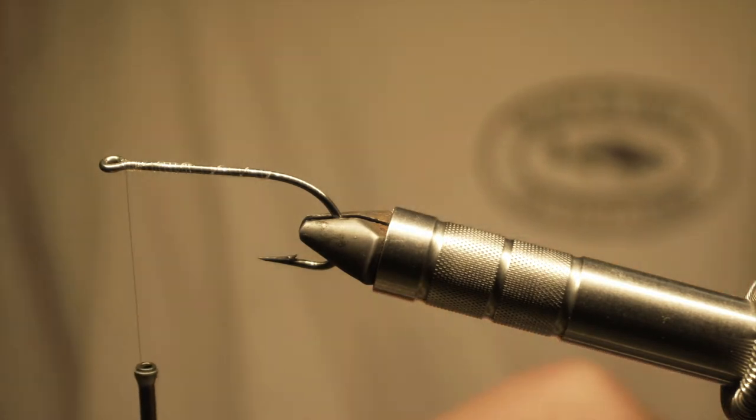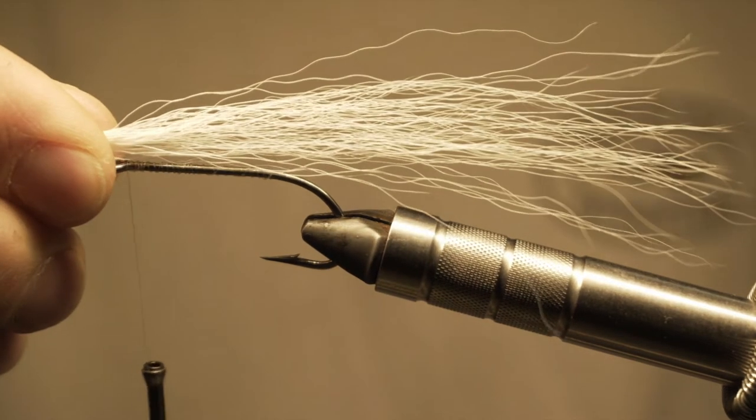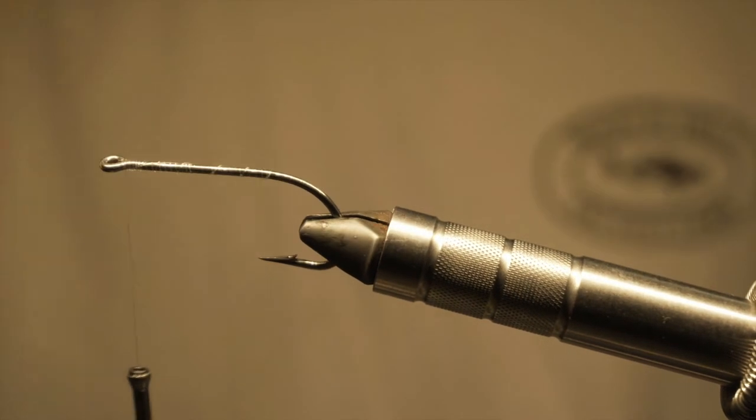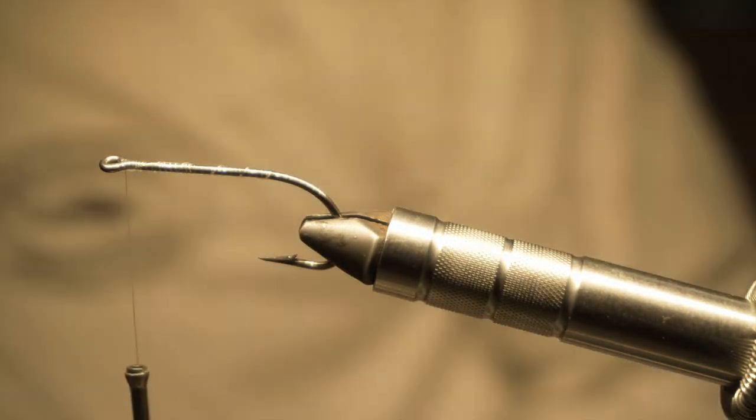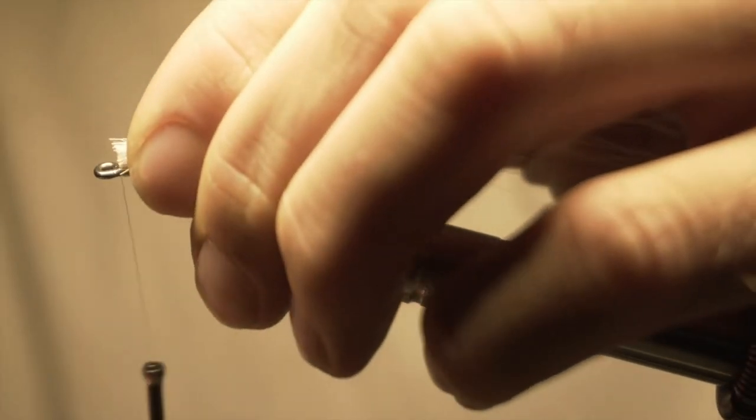I like to do the bucktail about two and a half times the hook shank, so we'll cut that. Always keep a trash can nearby - bucktail can be pretty messy.